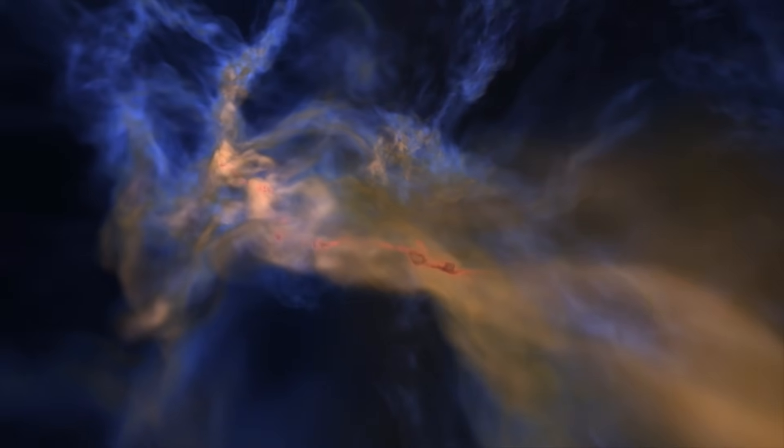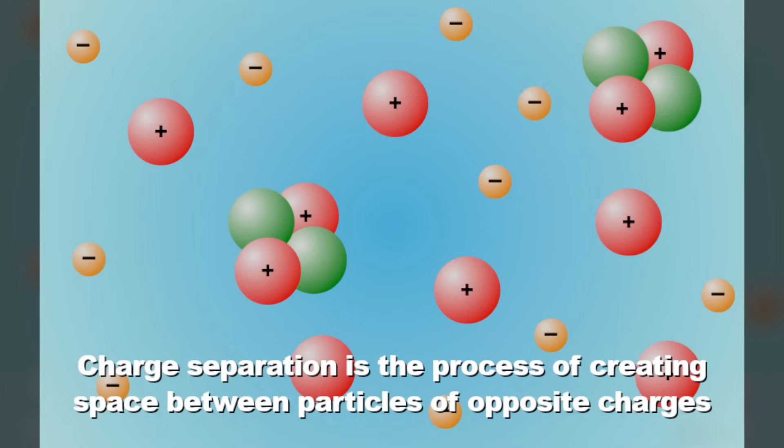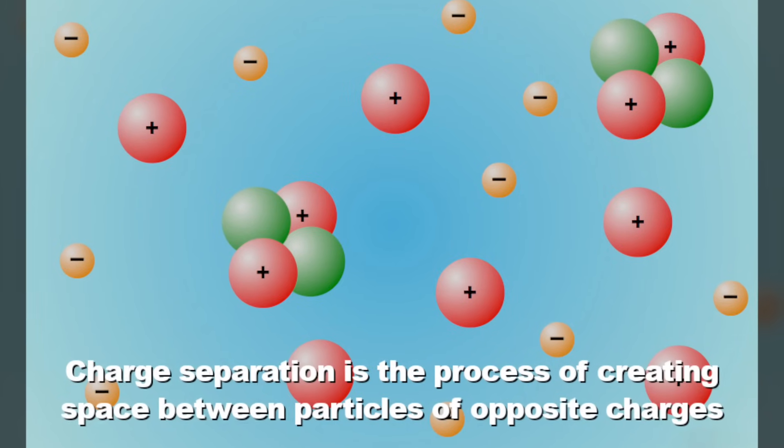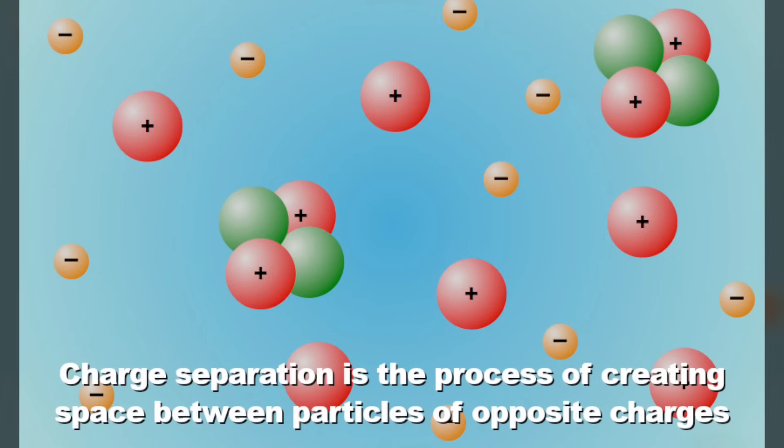The question includes an assumption carried over from the older vision. An assumption that the universe begins with neutral matter and that something, a generator, must separate charges to start the currents flowing. But it's just as likely to assume that the primordial condition of the universe was, or is, one of already separated charges.